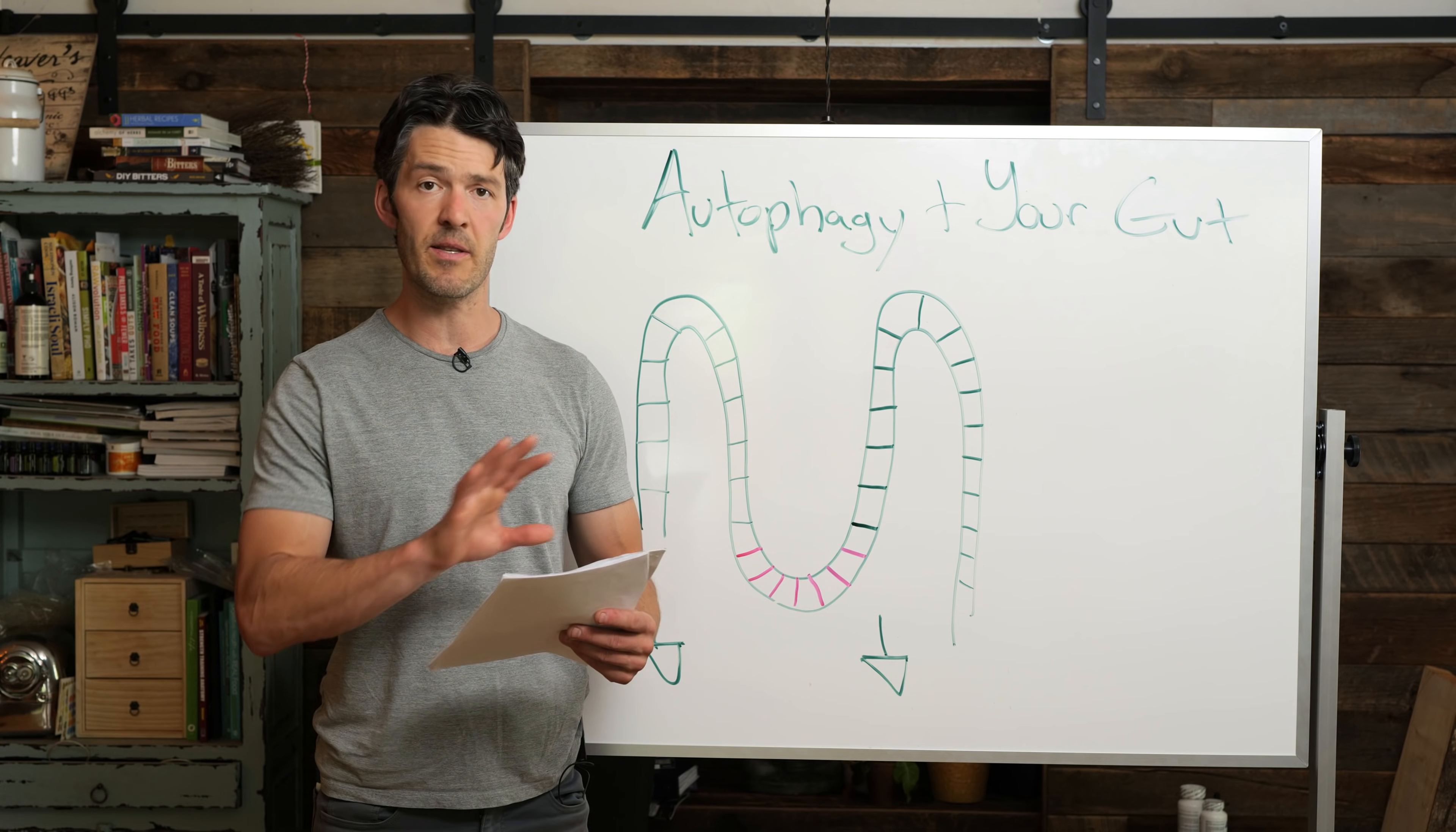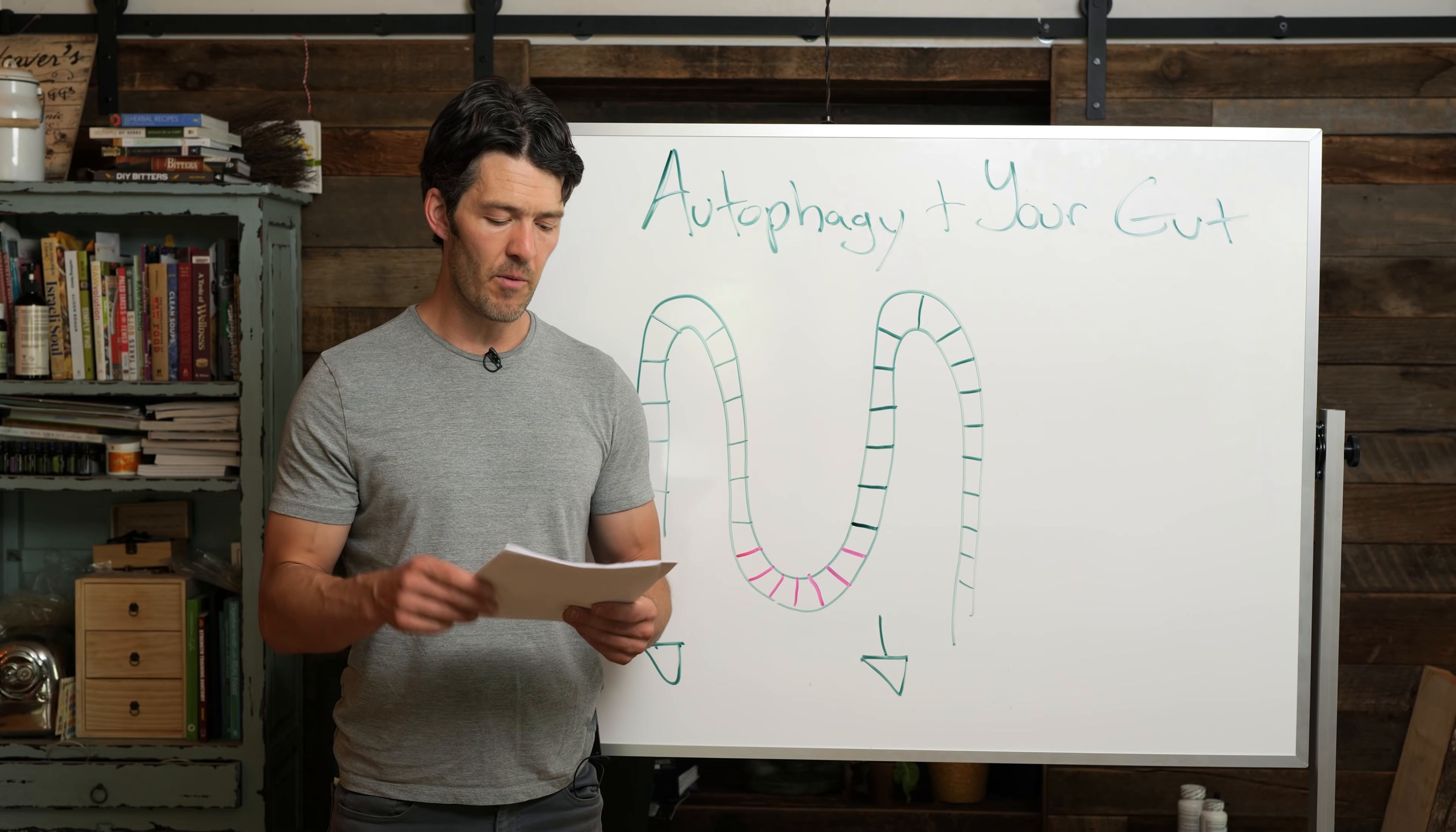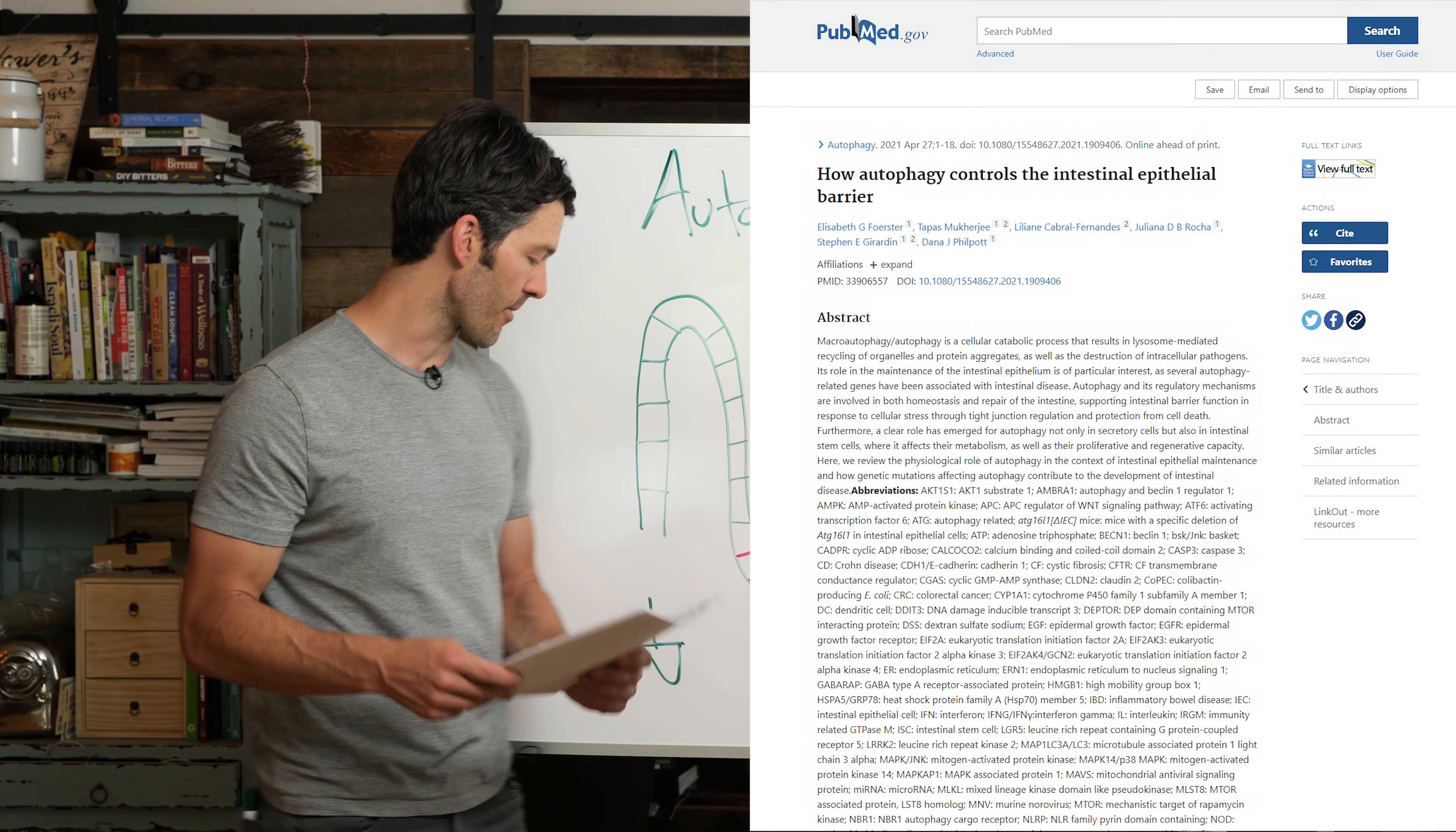The title of the paper, and I'll put it in the show notes, it's an amazing paper. I want to thank my friend Frida Turan, she's an MD PhD over at University of Iowa who helped get access to this full text paper. It's really hard to track down. The title of this is How Autophagy Controls the Intestinal Epithelial Barrier.